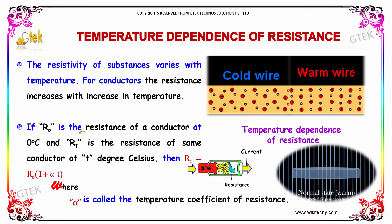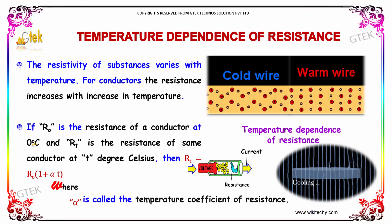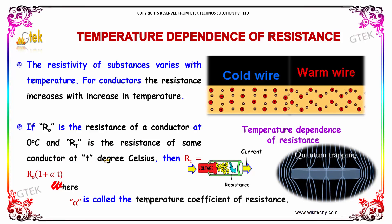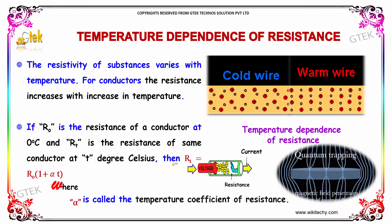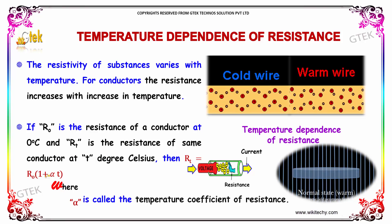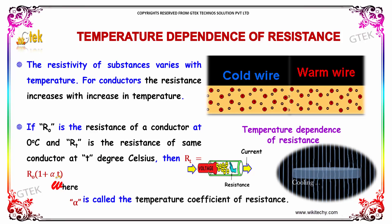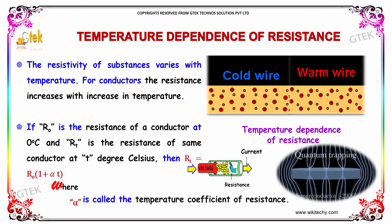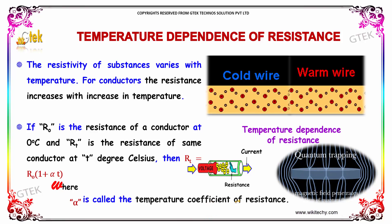If R0 is the resistance of a conductor at 0 degree Celsius, and Rt is the resistance of the same conductor at T degree Celsius, then Rt is equal to R0 into (1 plus alpha T), where alpha is the temperature coefficient of resistance.